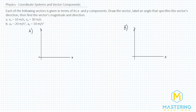Welcome to Mastering Solutions. In this vectors problem, they tell us that each of the following vectors is given in terms of its x and its y components. We have to draw the vector, label an angle that specifies a direction, and then find the magnitude and the direction.